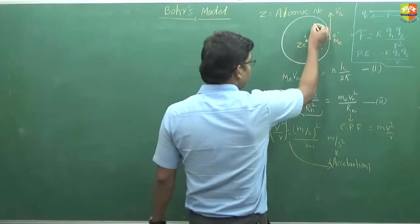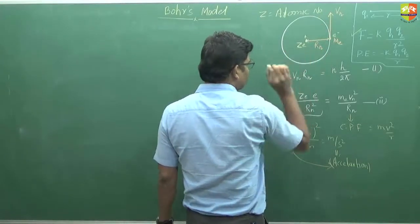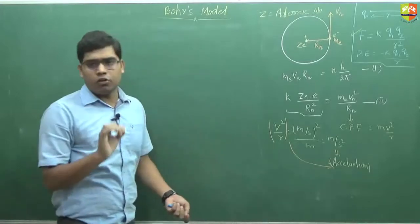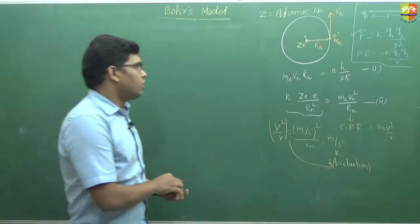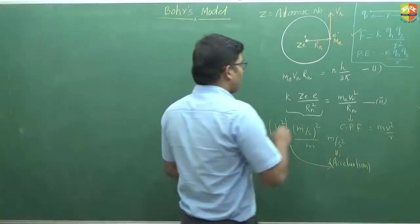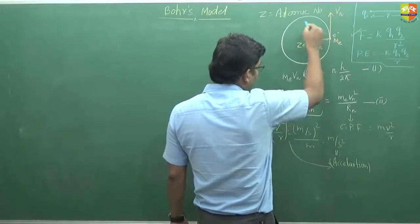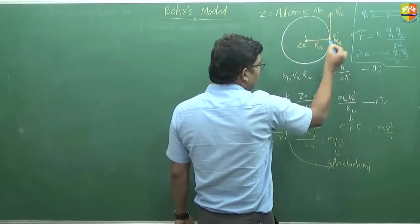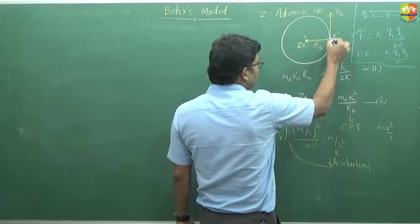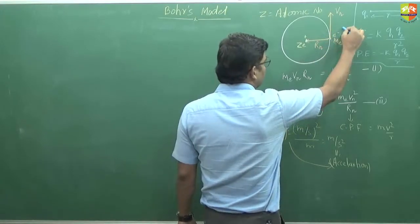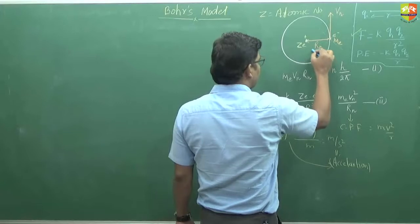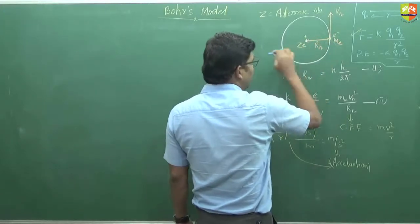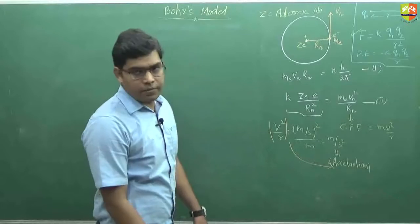Now suppose if you have some other electron present here. This is true for one electron system, and that is what we are going to understand now. Suppose if you have some other electron present in the inner shell, then this electron and this electron will have some repulsion. So the net force we have to calculate in all these directions.